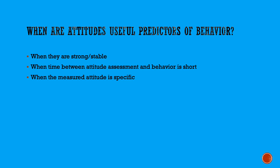The more specific the attitude is, the better it's going to be as a predictor of behavior. For example, a study done quite some time ago tried to see if attitudes predicted which women would be likely to use birth control pills. They got a measure of attitude toward birth control and found it was not a reliable predictor. However, if they asked more specifically and assessed attitudes toward birth control pills, that more specific attitude was a better predictor than asking a more general question about birth control. So more specific attitudes are better predictors than less specific attitudes.